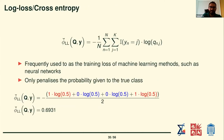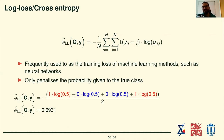Another well-known proper scoring rule is log loss, also known as cross entropy. The indicator function is multiplicative, meaning the probability given to an incorrect class is multiplied by zero and has no weight. Log loss only penalizes the probability given to the true class. It is frequently used to train models such as neural networks, and this can be one reason they become overconfident — they learn to give high probabilities to the correct class.